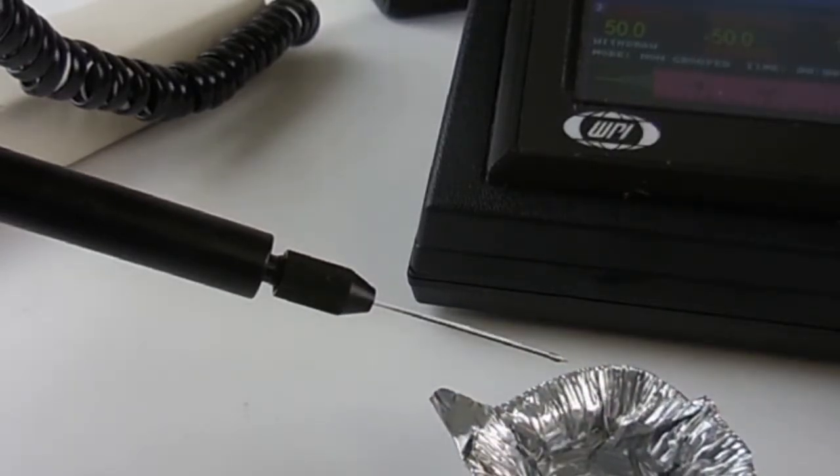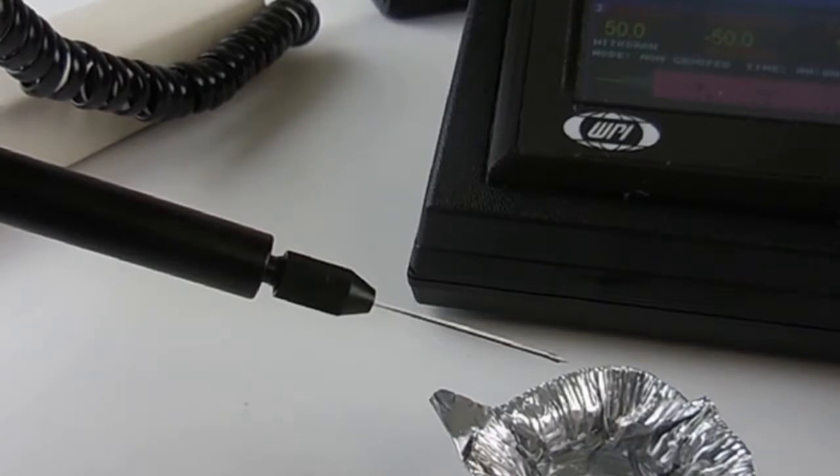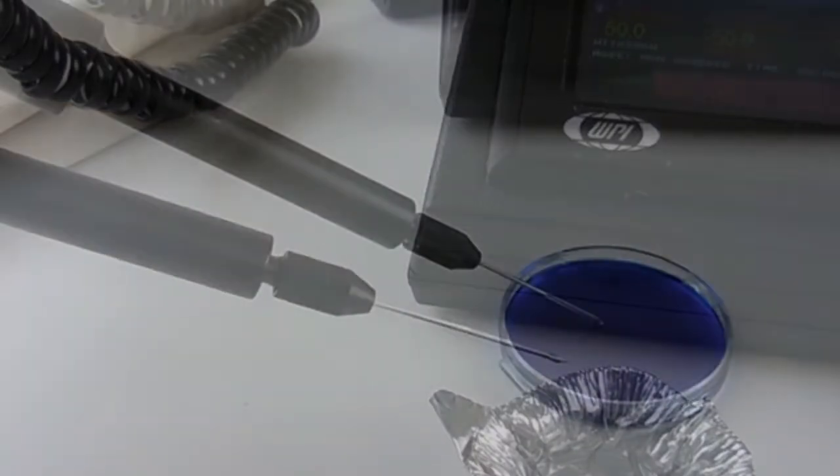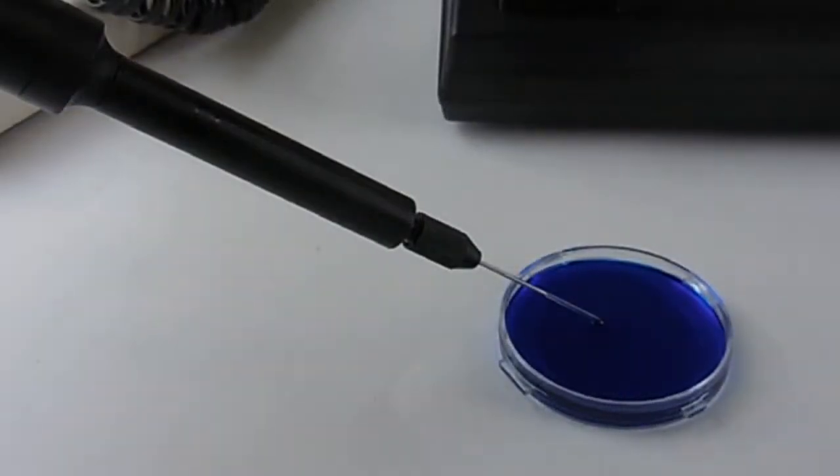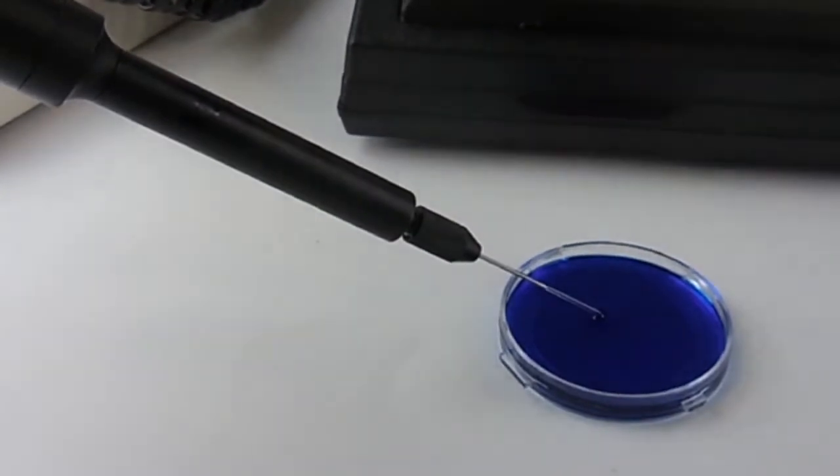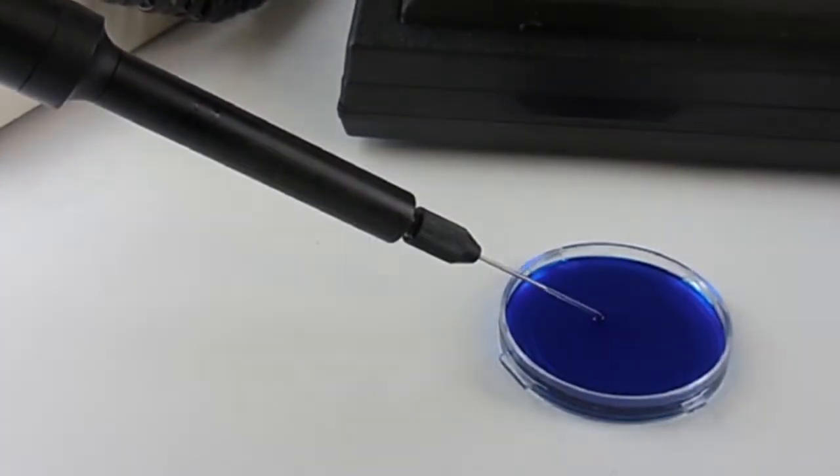Once you have dispensed the total volume, now bring the micropipette to the liquid you want to inject. With the micropipette in the solution, change the direction on the Micro 2T to withdraw. If you are using the standard controller, press the fill button.